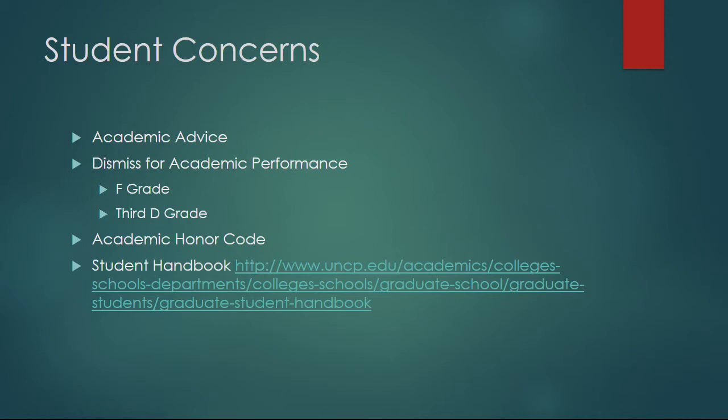Another issue we must address is academic honesty. The university has an academic honor code — you're expected to live up to it. Read it and follow it. Faculty are instructed to provide this information in their courses and enforce this policy. There are tools that can be used to determine the source of material. Copying work you did not produce and representing it as your own is the most frequent issue. Make sure you're aware of what your instructor is looking for when it comes to citing sources. An academic honor code violation can result in dismissal from the program.